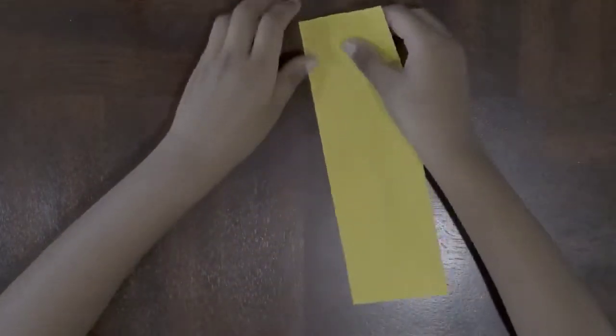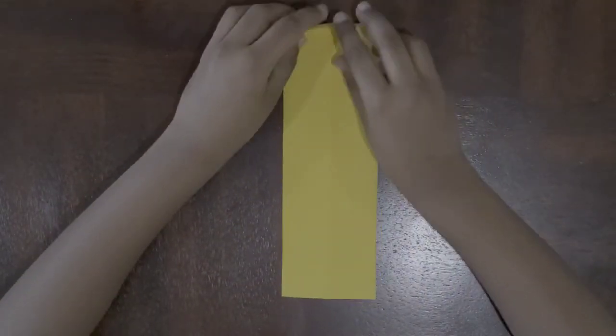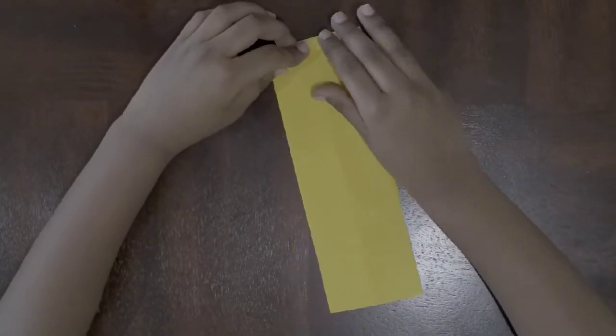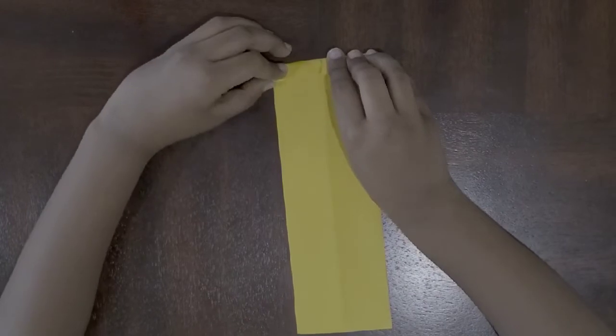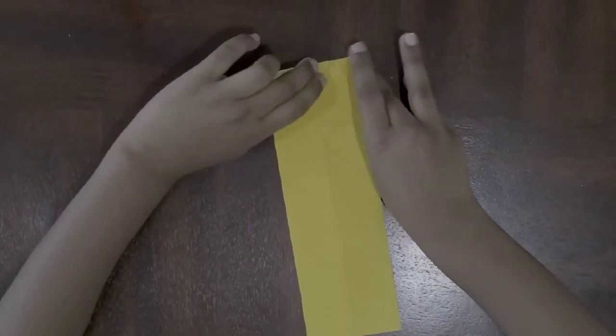Next, flip it over and then fold it down. This is the color for your shirt. If you want to make it thick, you can. If you want to make it thin, you can. Just do whatever feels right to you.